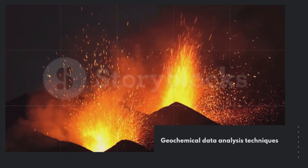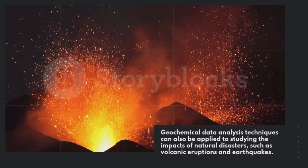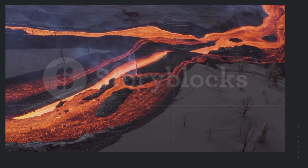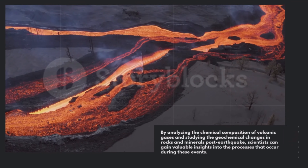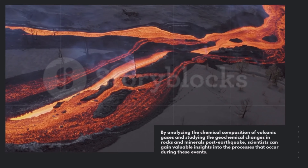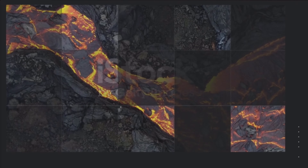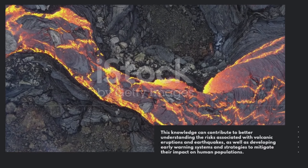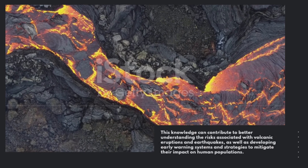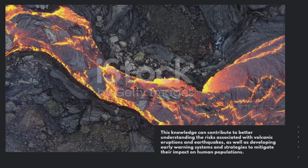Geochemical data analysis techniques can also be applied to studying the impacts of natural disasters such as volcanic eruptions and earthquakes. By analyzing the chemical composition of volcanic gases and studying the geochemical changes in rocks and minerals post-earthquake, scientists can gain valuable insights into the processes that occur during these events. This knowledge contributes to better understanding the risks associated with these disasters and developing early warning systems to mitigate their impact.